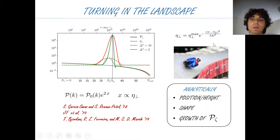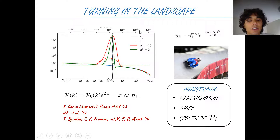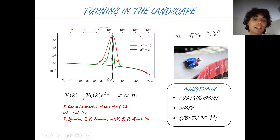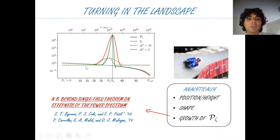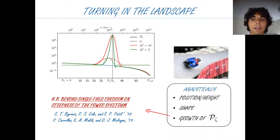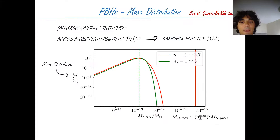As an example, if you take a bending parameter given by a Gaussian profile — say two Gaussian profiles, one narrower than the other — you see the resulting power spectrum with a peak whose width depends on the profile. We went a step further in that we have an analytical understanding relating the microscopic physics to the position, height, and shape of the power spectrum. I want to stress the growth rate of the power spectrum, because there are well-known theorems in single-field inflation on how steep the power spectrum can grow, and these theorems can be evaded by multi-field dynamics, as we show analytically.